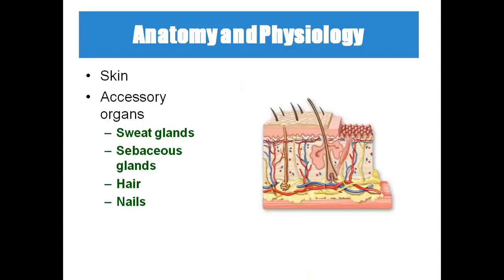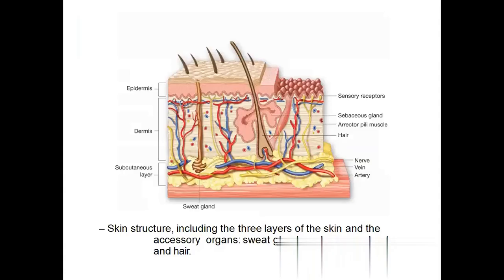In anatomy and physiology, the skin and its accessory organs — sweat glands, sebaceous glands, hair, and nails — make up the integumentary system. The whole skin is divided into three layers: epidermis, dermis, and subcutaneous tissue.